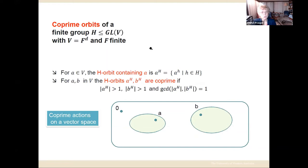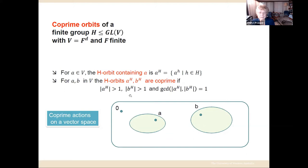The title of the talk is about co-prime orbits of a group. Again we've got a finite group acting on a vector space. For any vector A, the H-orbit containing A is the collection of images of A under all elements of H — that gives us a set of vectors. If I think of the H-orbits containing two different vectors A and B, those orbits are called co-prime if: first, both have size bigger than one (so neither vector is fixed by everything in H), and second, the lengths of the orbits are co-prime — no prime divides both lengths.